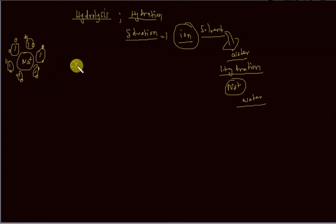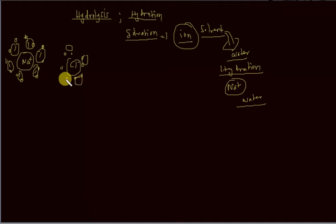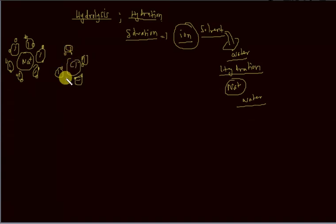In a similar way, chloride ion is also surrounded by water molecules, where hydrogen comes at the front since they have a positive charge, and oxygen goes behind. Oxygen carries a negative charge and the small circles represent hydrogen ions. In this way, this particular process is called as hydration.